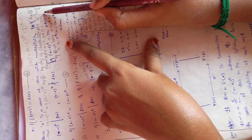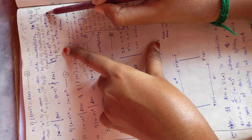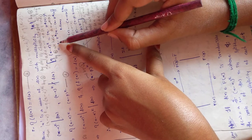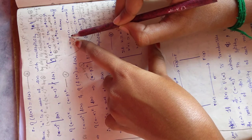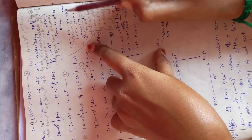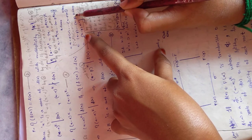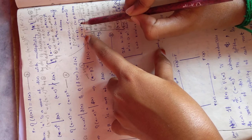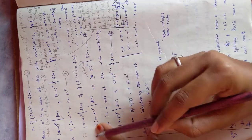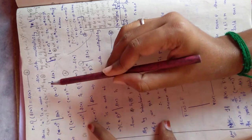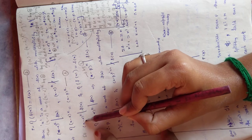Therefore eta((x - alpha)^k) = (x - beta)^k. Let this be equation 3. Since (x - alpha)^k divides f(x) and eta(f(x)) = f(x), applying eta gives: eta((x - alpha)^k) divides eta(f(x)) = f(x). Substituting, (x - beta)^k divides f(x). Let this be equation 4.